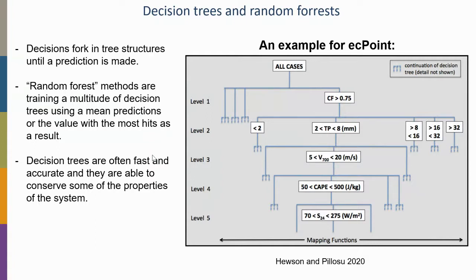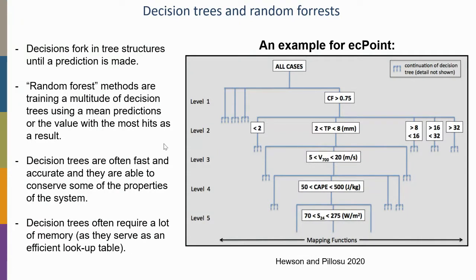Decision trees are often fast and accurate and can conserve properties of the system. Unlike neural networks — which are black boxes where it's difficult to enforce conservation of mass for example — decision trees are more linked to individual known decisions, making it easier to conserve properties. However, for high performance computing, decision trees require a lot of memory, making them somewhat clunky in HPC systems.